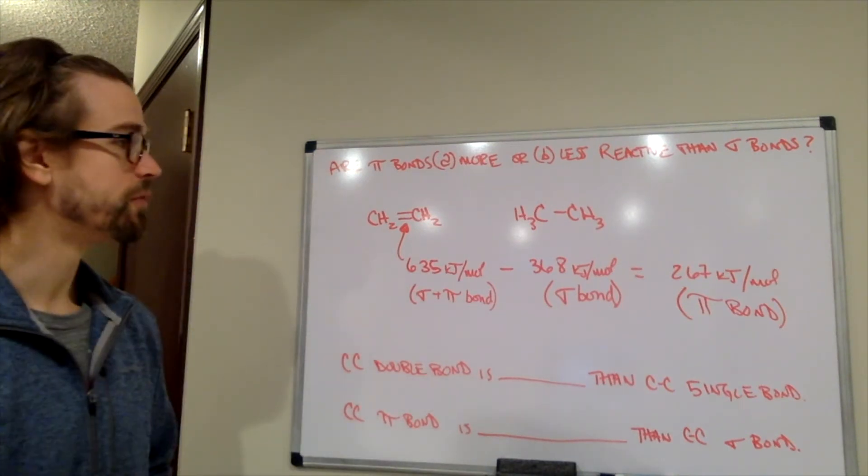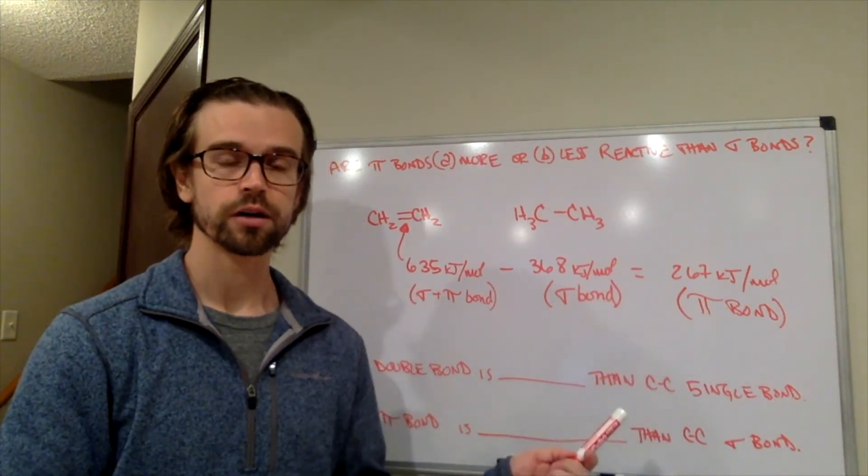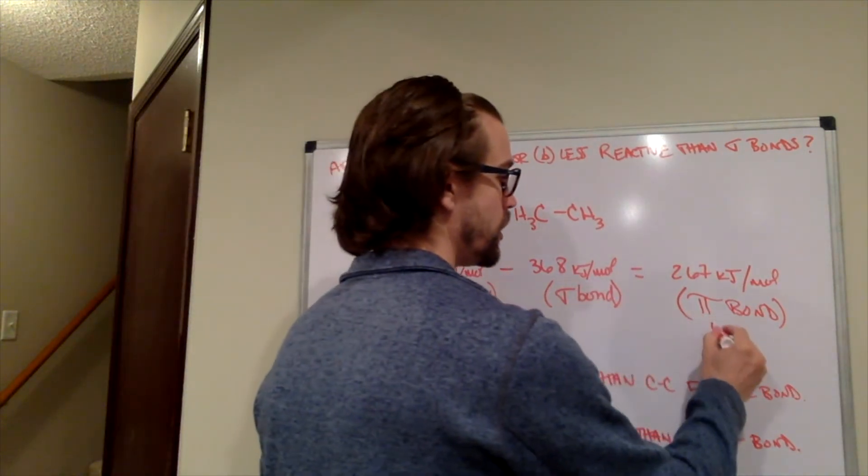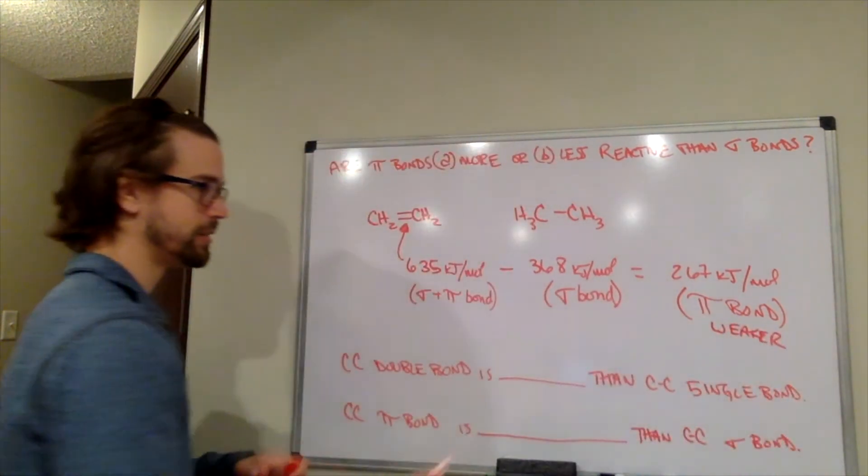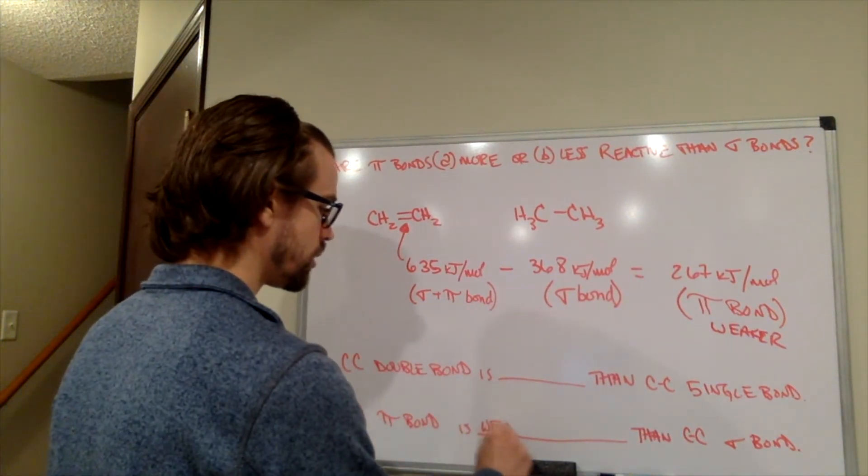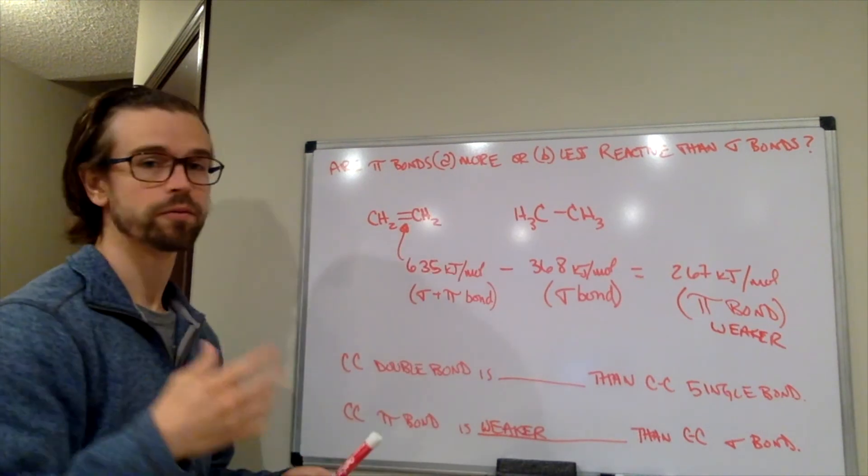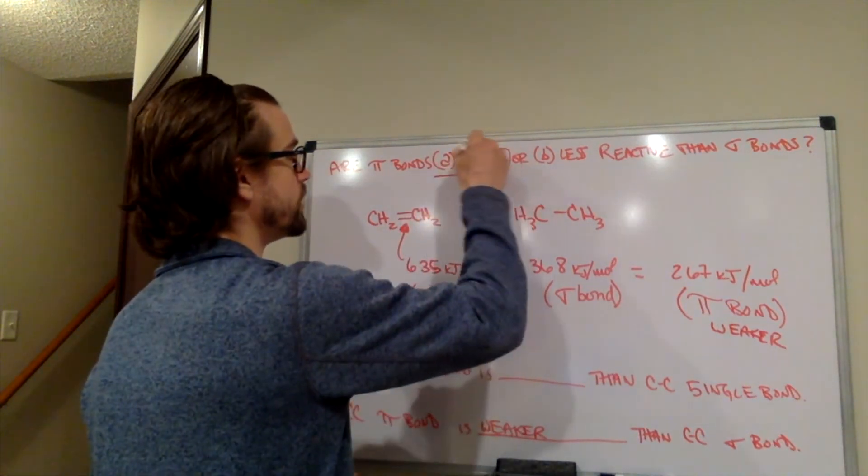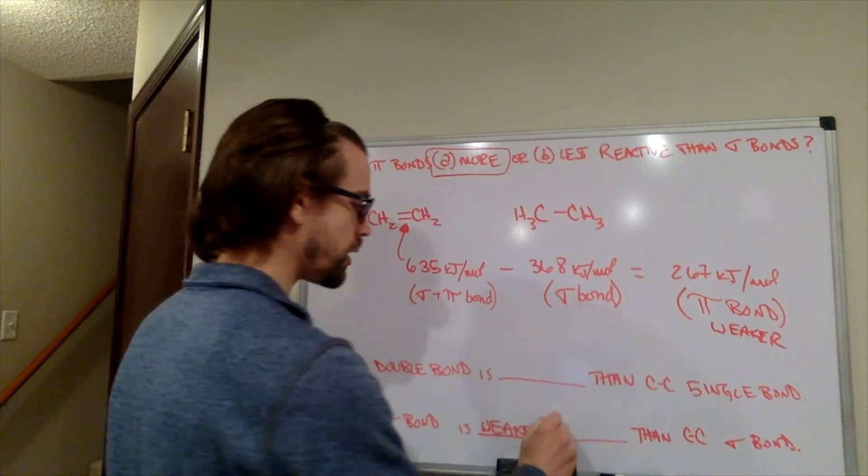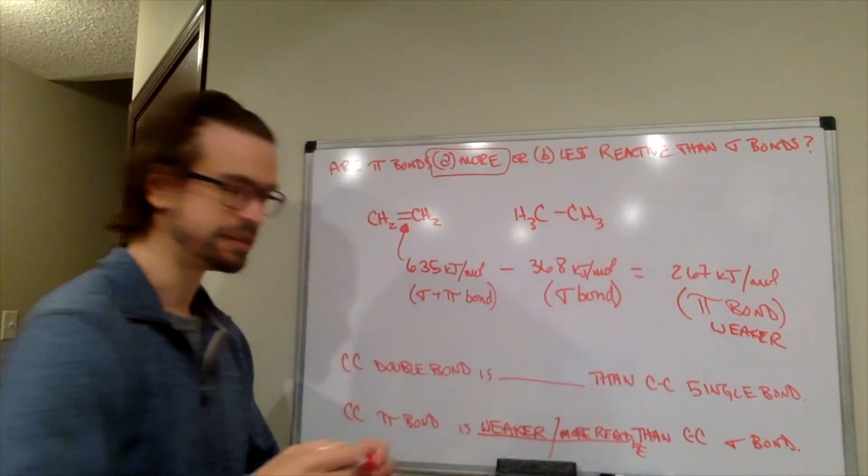You did that. So they are lower energy, so does that mean they are stronger or weaker? They are weaker bonds, so pi bonds are weaker. And that allows us to fill in one of the blanks down here. A CC pi bond is weaker than a CC sigma bond. And our pi bond is more or less reactive. Well, if it's a weaker bond, that's going to make it more reactive. CC pi bond is weaker and also more reactive. It's easier to break than a CC sigma bond.